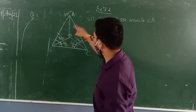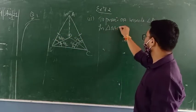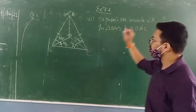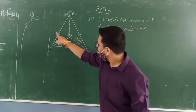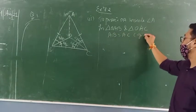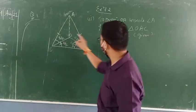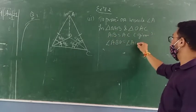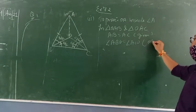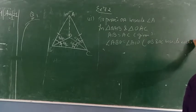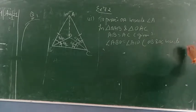I can write triangle OAB and triangle OAC. Now considering these two triangles: AB equals AC — this is given in the question. Then angle ABO equals angle ACO, with the reason that OB and OC bisect angle B and angle C respectively.